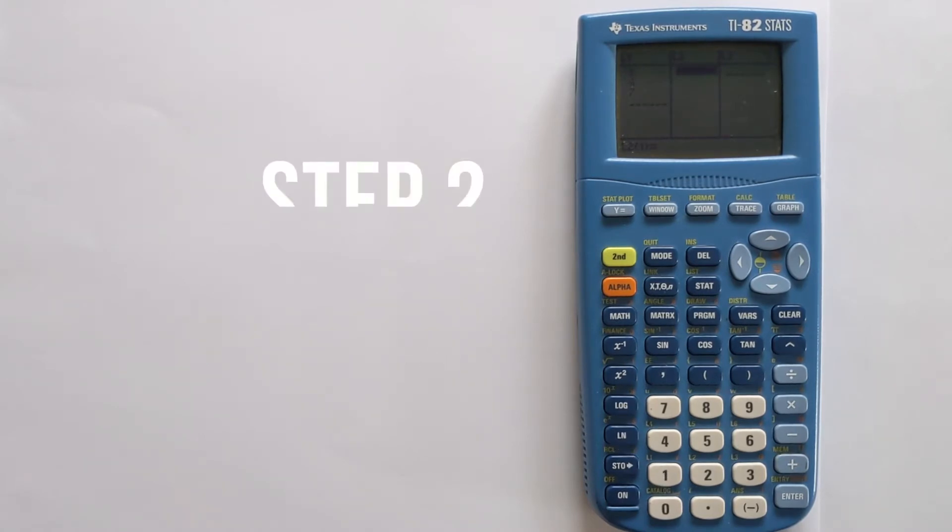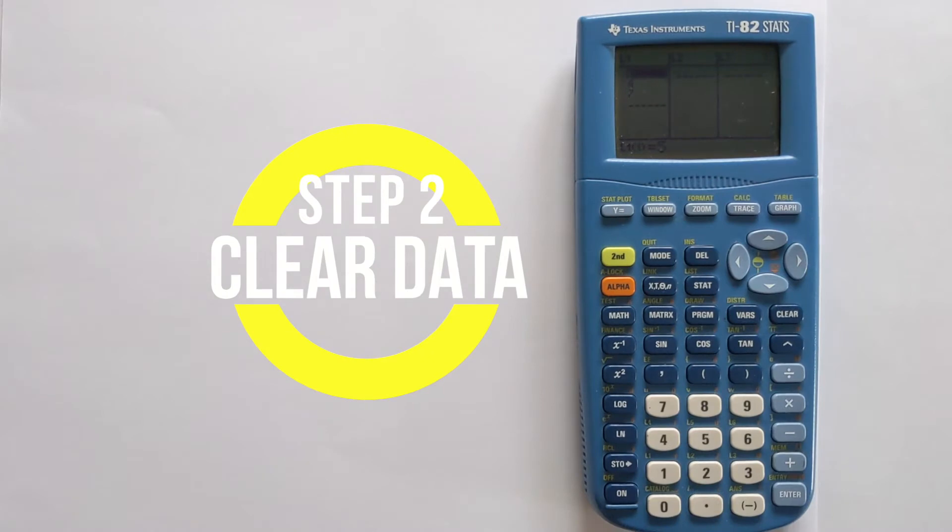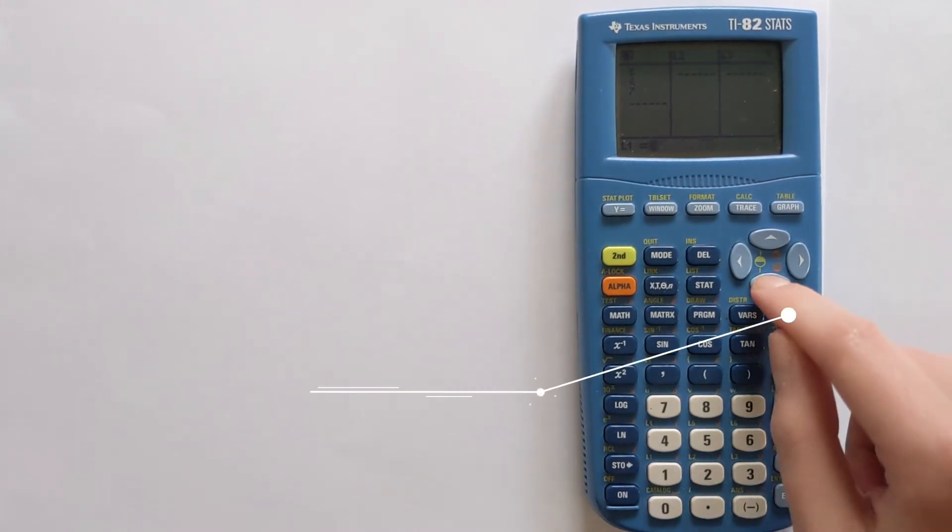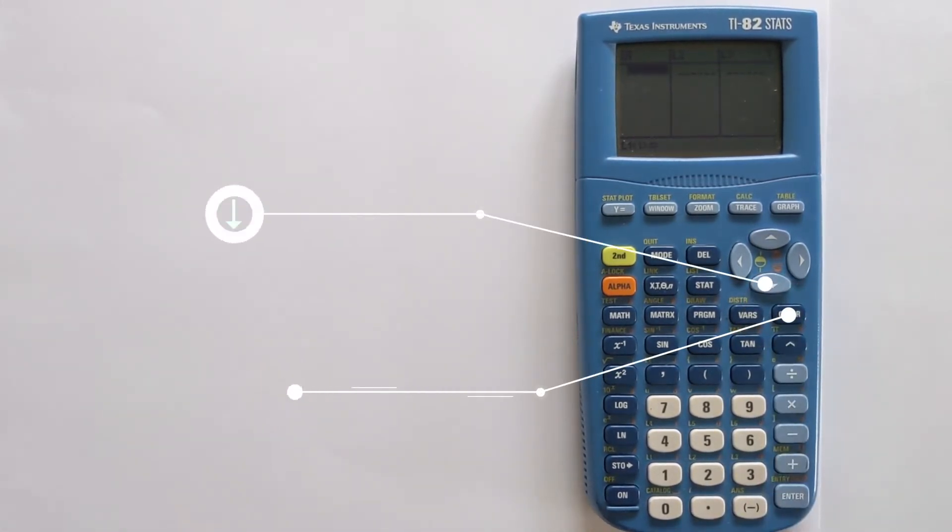Before we can input the data in the worked example I'm going to show you, you have to clear all of the data from previous calculations. You do this in a slightly clumsy way. You want to highlight L1 at the top, the very top of the table, then press clear, and then press down. That has wiped everything that is stored in that table.